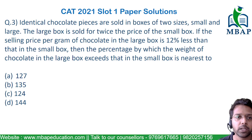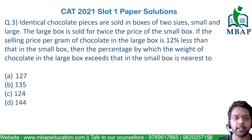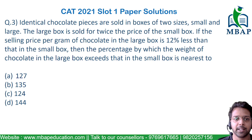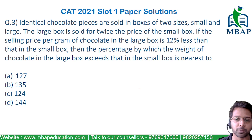Let's read the next question. The question says: identical chocolate pieces are stored in boxes of two sizes — one small and one large. The large box is stored for twice the price of the small box. If the selling price per gram of the chocolate in the large box is 12% less than that in the small box, then by what percentage does the weight of the chocolate in the large box exceed that of the smaller box?